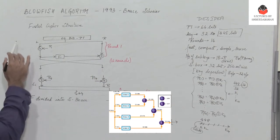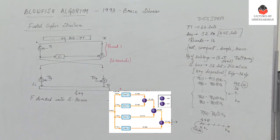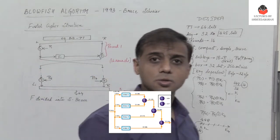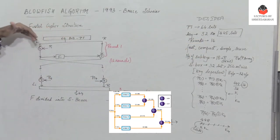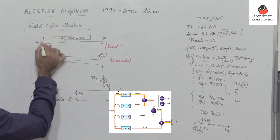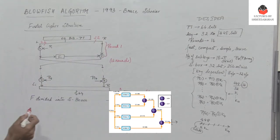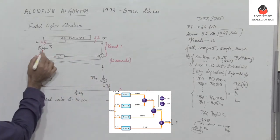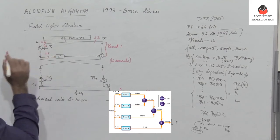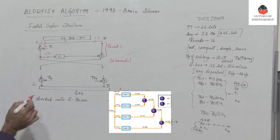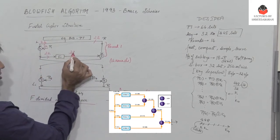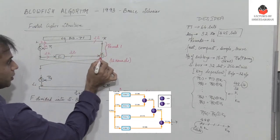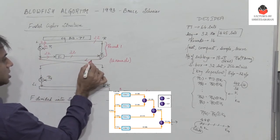In the encryption process, Blowfish uses the Feistel cipher structure, similar to DES. The 64-bit plain text is divided into a left half and a right half of 32 bits each. The left 32 bits are XORed with the first subkey P1, and those 32 bits are then given to function F. The output of function F is 32 bits and is XORed with the right half.